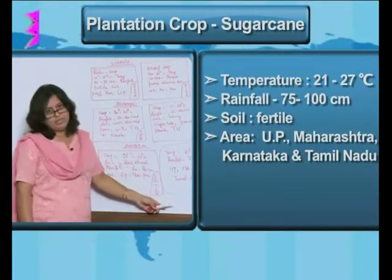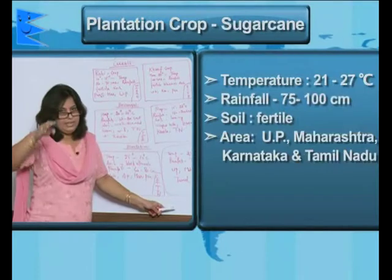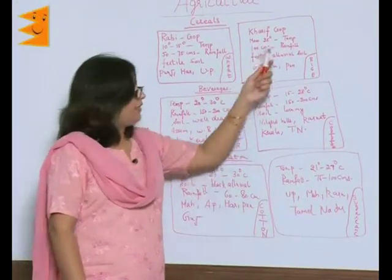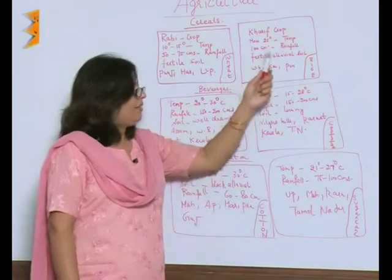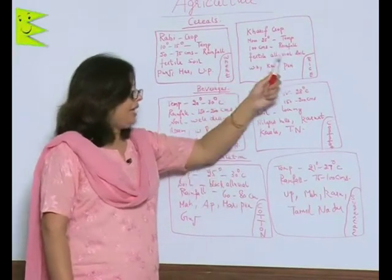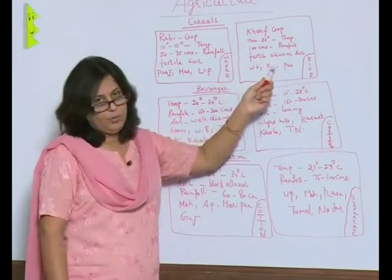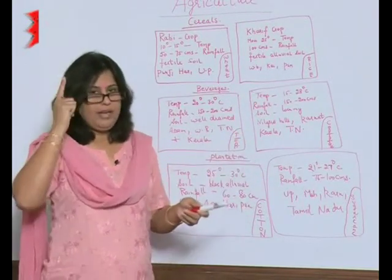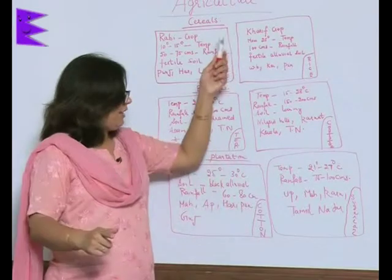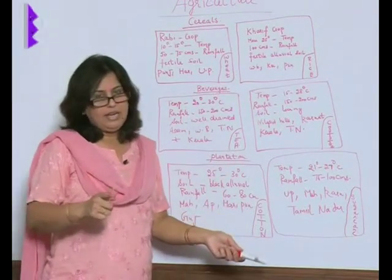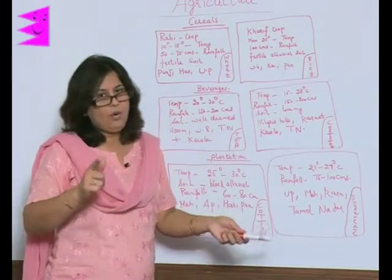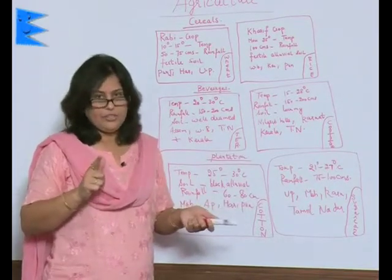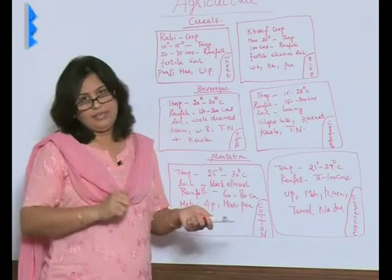If you just make these six boxes, you will easily remember the kind of crop, the temperature required, the rainfall requirement, the kind of soil, and where it is grown. Isn't it very easy? So quickly pick up your registers and draw these six boxes — that is how you learn about these crops. I'll continue with it in the next clipping.